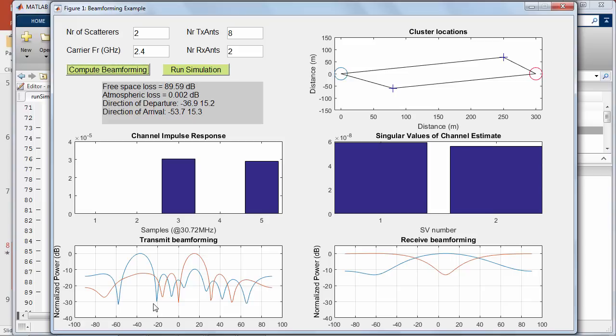the energy for both layers is concentrated towards the direction of the two scatterers, minus 37 and plus 15 degrees, as any energy sent to all other angles is lost.